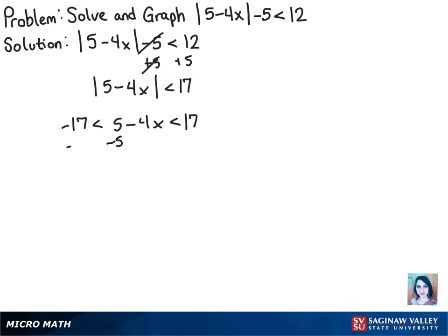Now we can subtract 5 from all sides. We get negative 22 is less than negative 4x is less than 12.